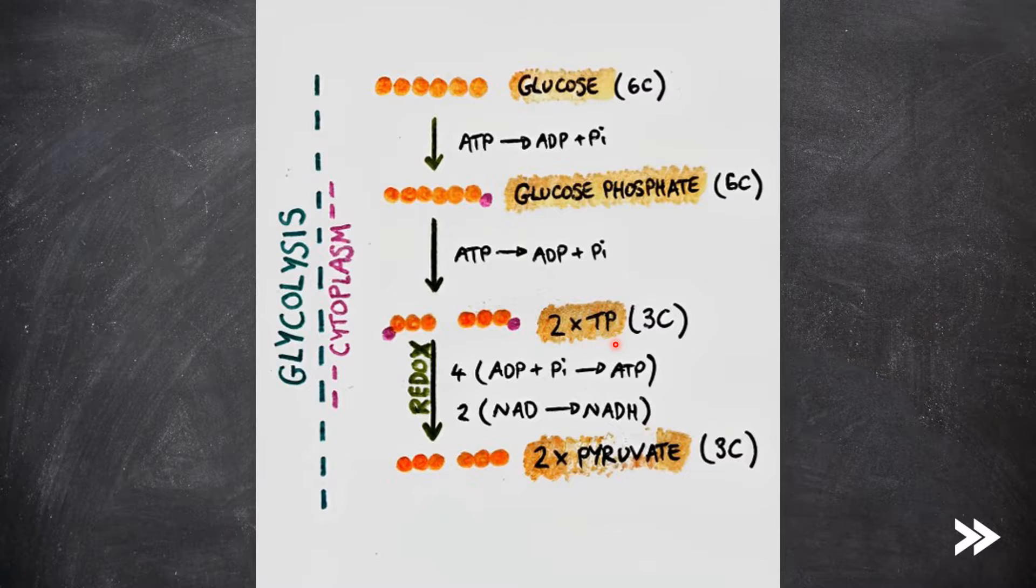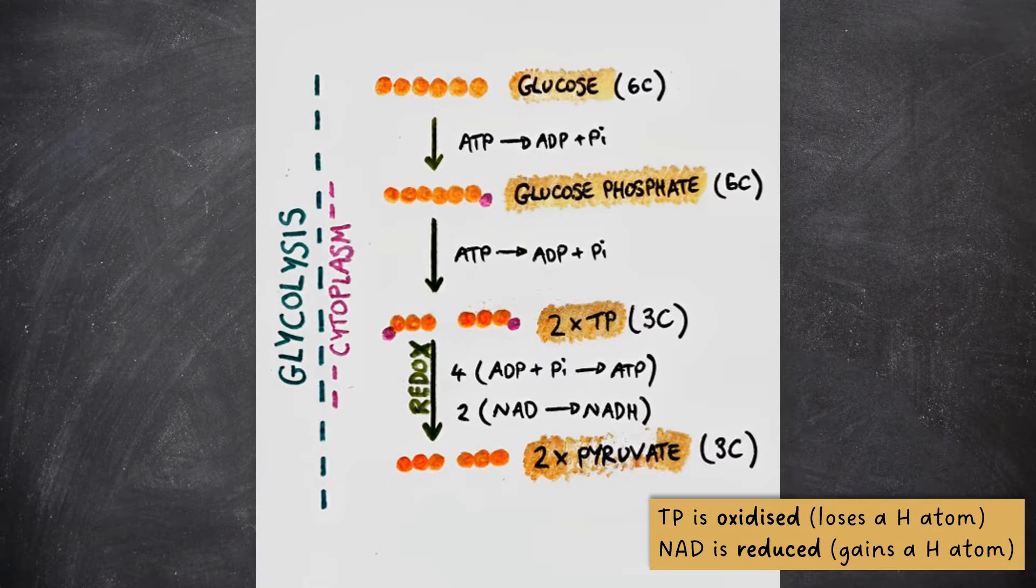Then, the two TP molecules are converted into two pyruvate molecules. This is done via a redox reaction, where TP is oxidized and NAD is reduced. Note that, for these types of questions, if asked why something is oxidized or reduced, the mark scheme wants you to refer to species gaining or losing hydrogen atoms. So, in this case here, you would have to state that TP is oxidized because it loses a hydrogen atom, and NAD is reduced as it gains a hydrogen atom.